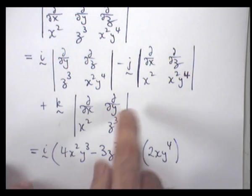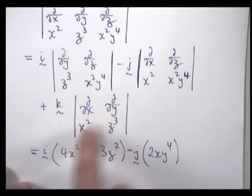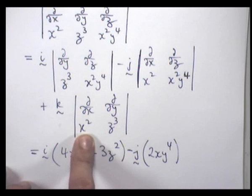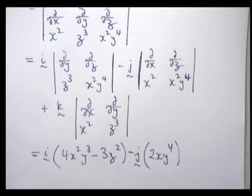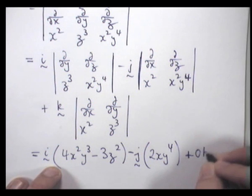Now in the last determinant, you can see if we expand that diagonally, d/dx of z squared is 0, d/dy of x squared is 0. So it's not going to add anything to our answer here.